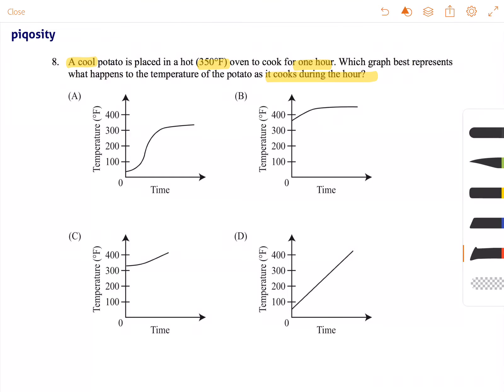Each of these graphs has temperature for the y-axis and time for the x-axis. We don't have to worry about any of the graphs being different in that case. But we need to look at each one and see which best represents how the temperature of the potato will change over an hour.